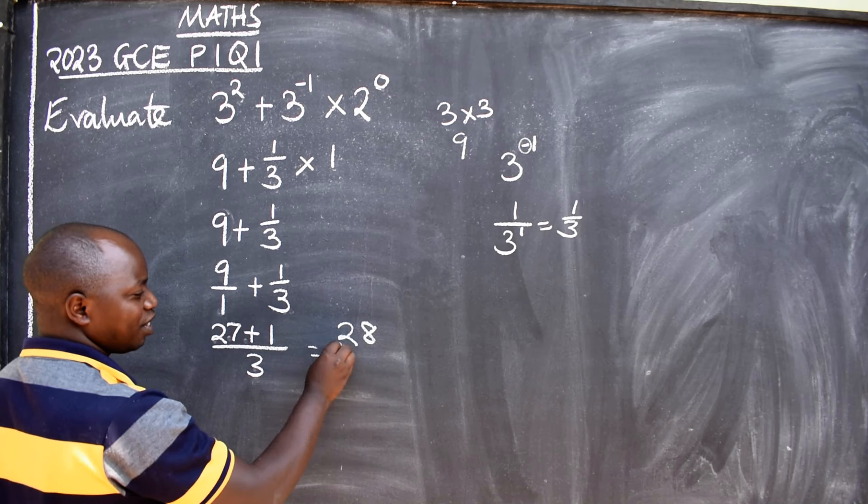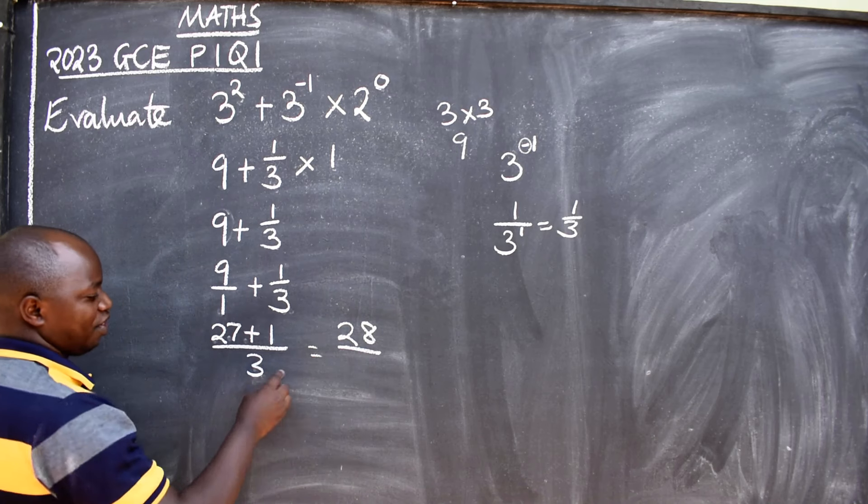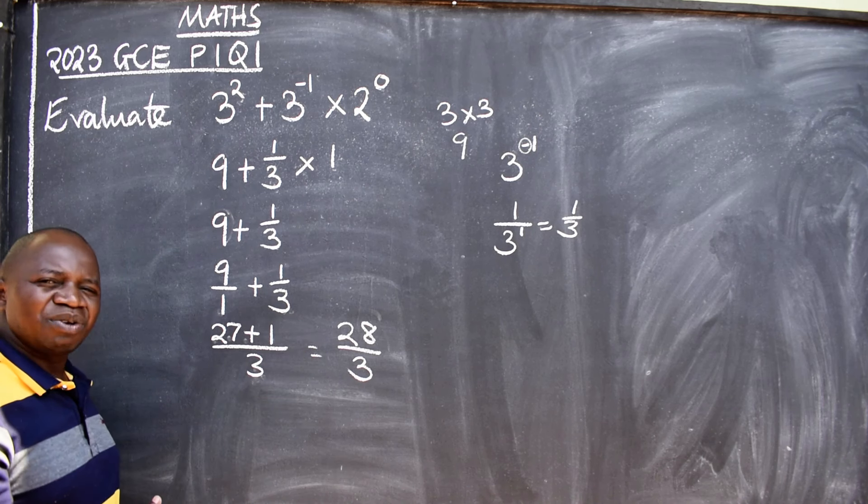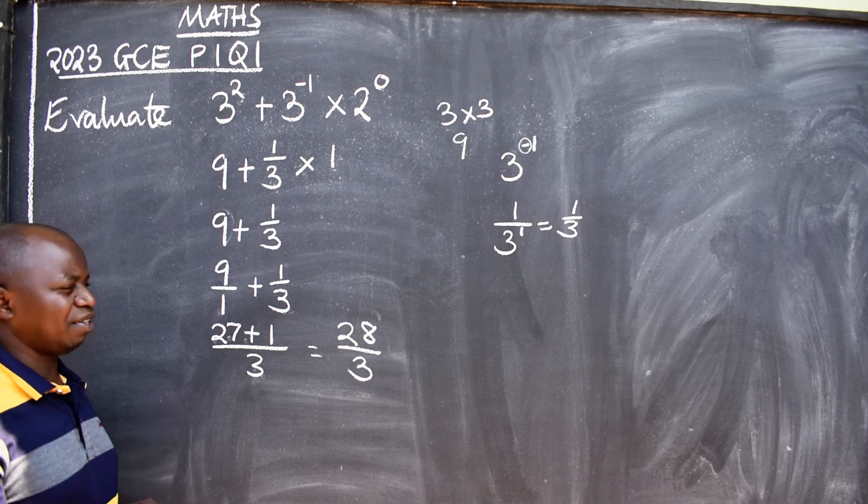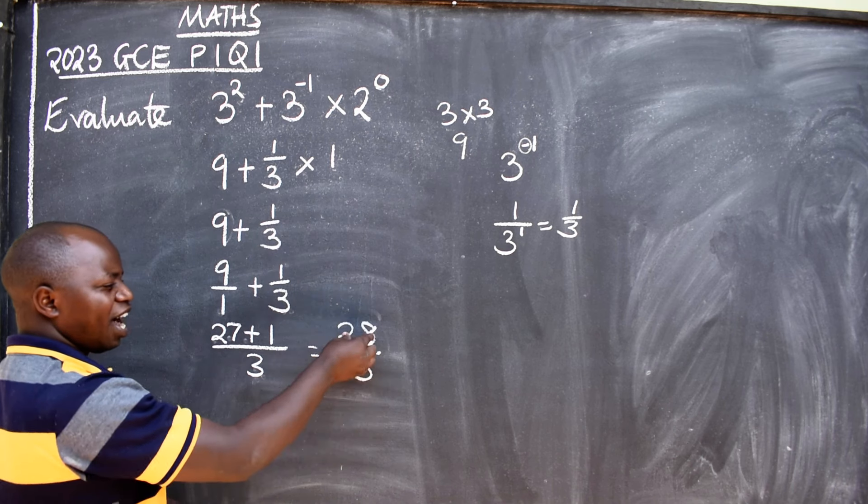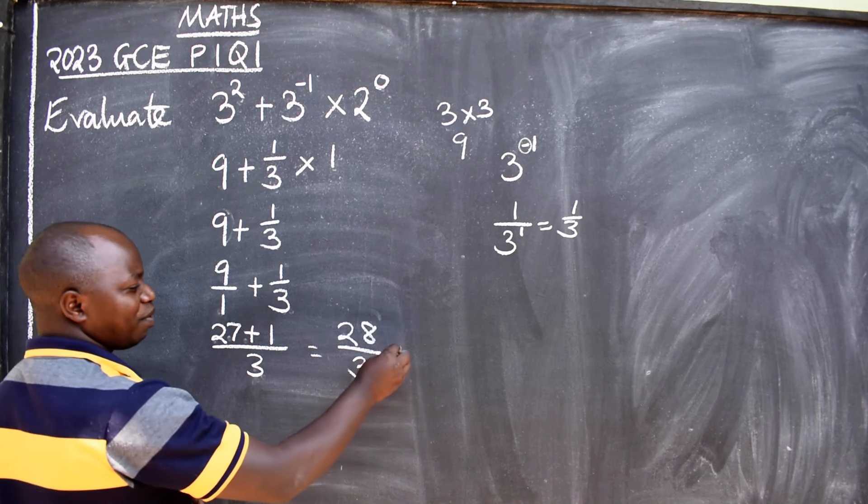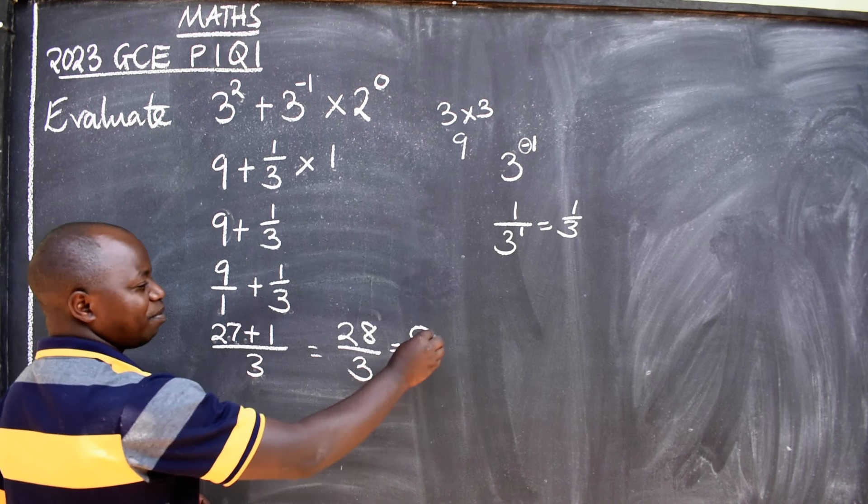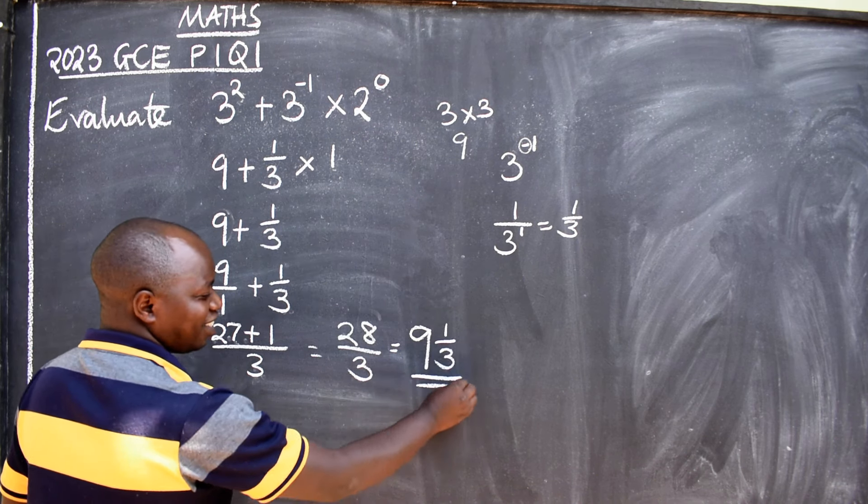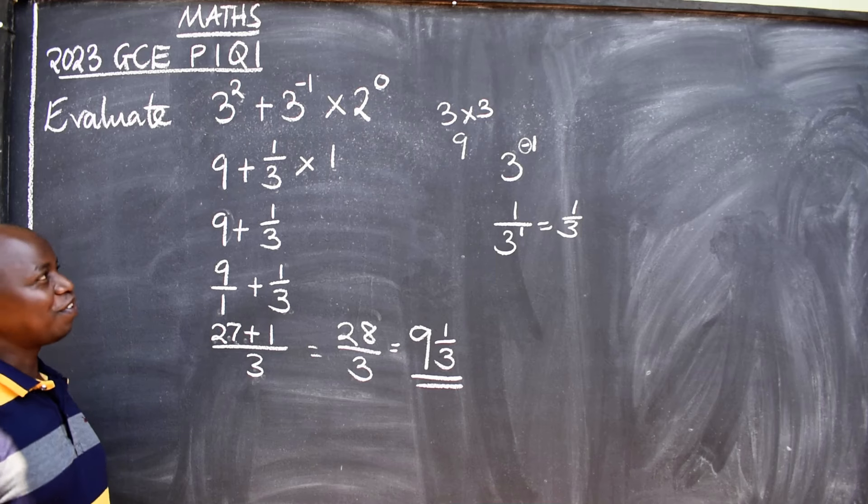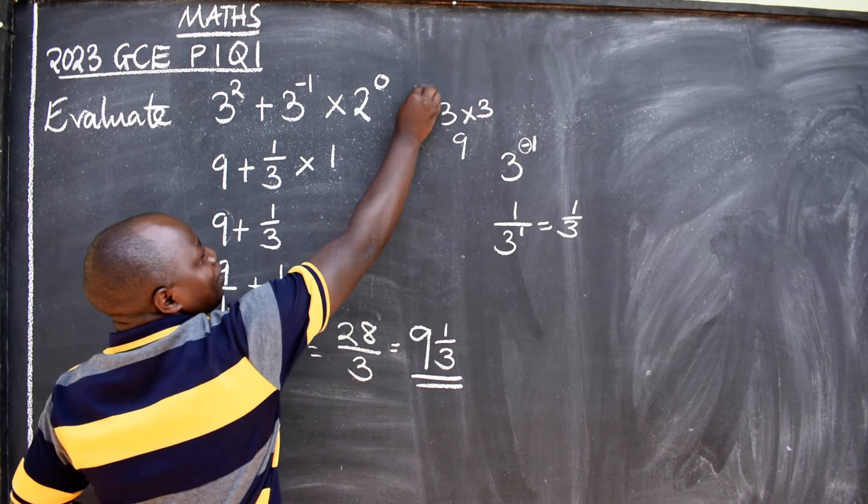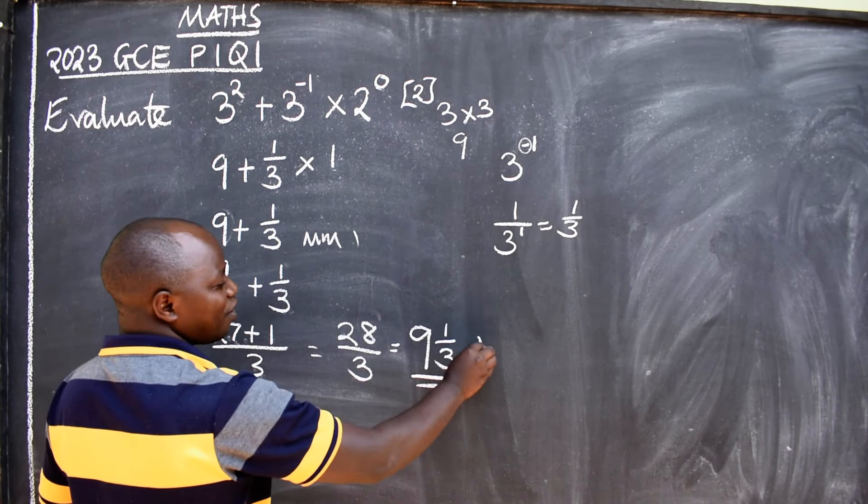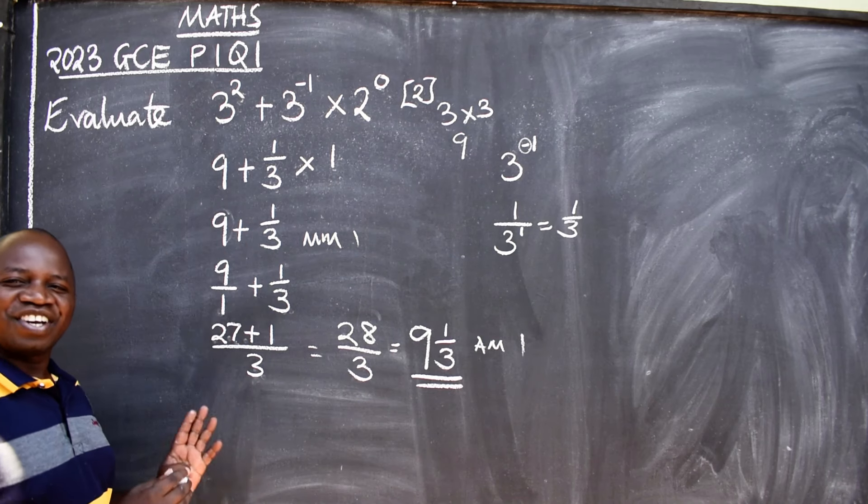So here I'll get 28 over 3. You can leave it there, there's no problem, but it's better you leave it in mixed fraction. How many 3s are in 28? You agree with me that there will be 9 of them, because it's 27 here, meaning the remainder will be 1 over 3. This is the correct answer. So this was given two marks—two marks, meaning your method mark here is one, and your answer mark will be one. I hope you have learned, thank you.